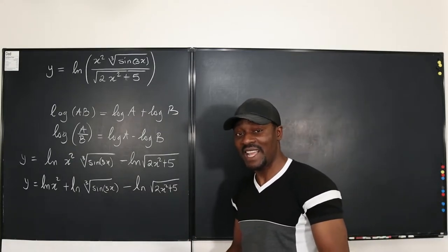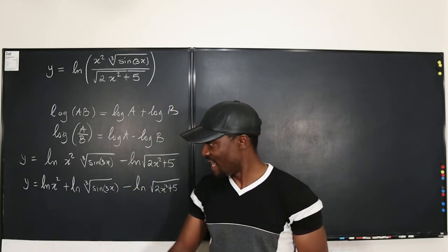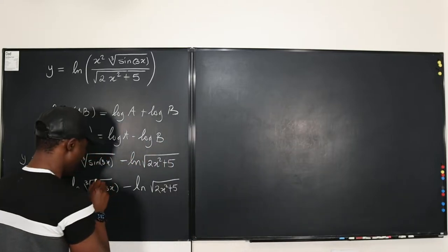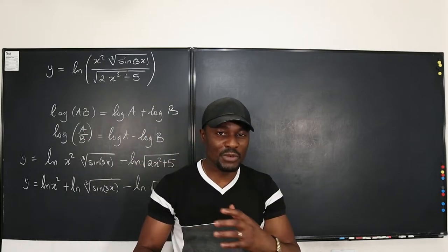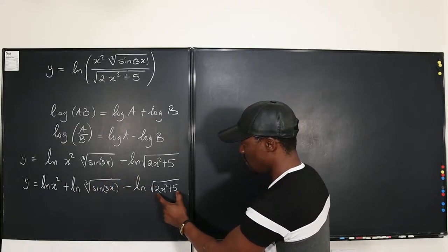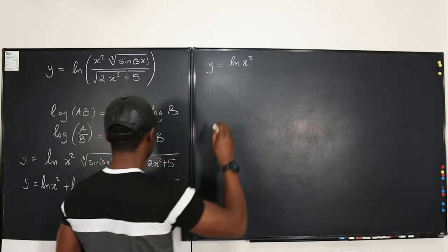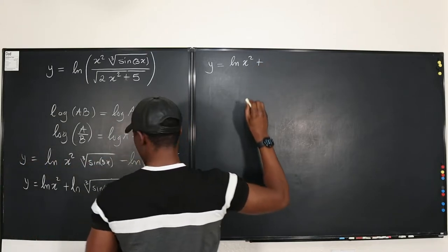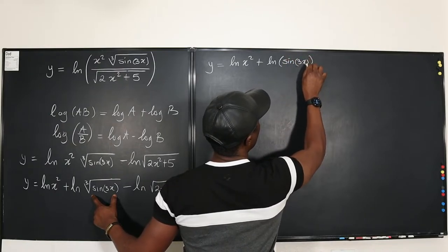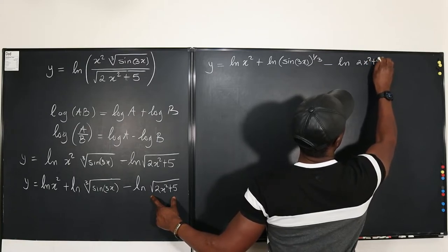One other fascinating thing about logarithms is that whenever you have exponents, you can take the exponent down as a coefficient. The cube root and square root are written in radical form, so we rewrite them in exponent form. So y equals the natural log of x squared, plus the natural log of sine 3x raised to power one-third, minus the natural log of 2x squared plus 5 raised to power one-half.